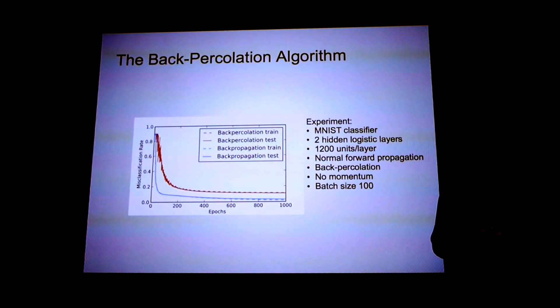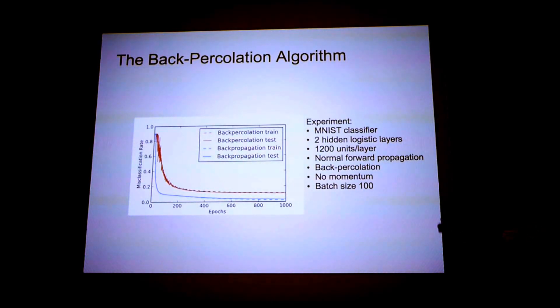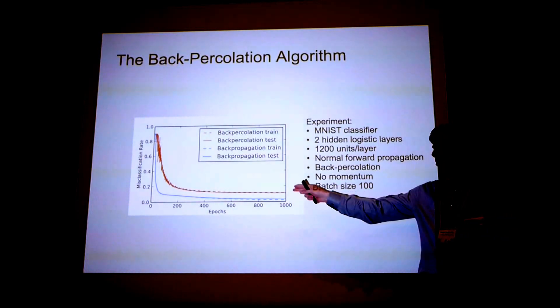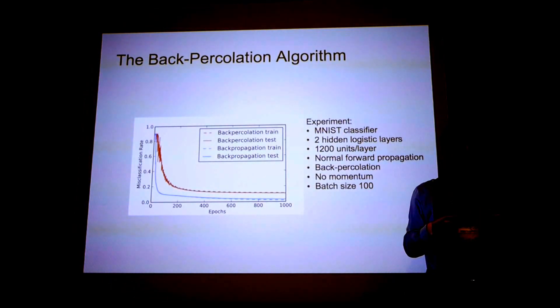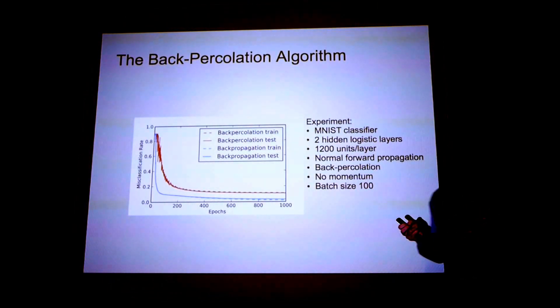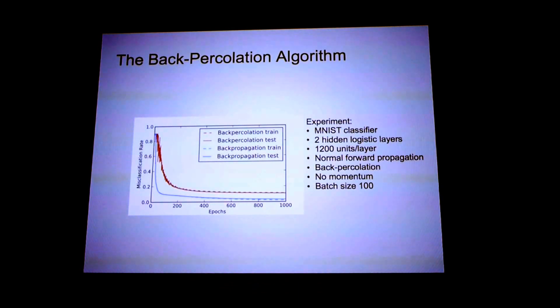So because this is stochastic, it's actually harder to train a neural network in this way. But it does train a multilayer neural network. Here we're comparing to back propagation, and you can see that back propagation trains faster. But this back percolation algorithm does train, and we haven't really explored all the parameters that might help make this work.